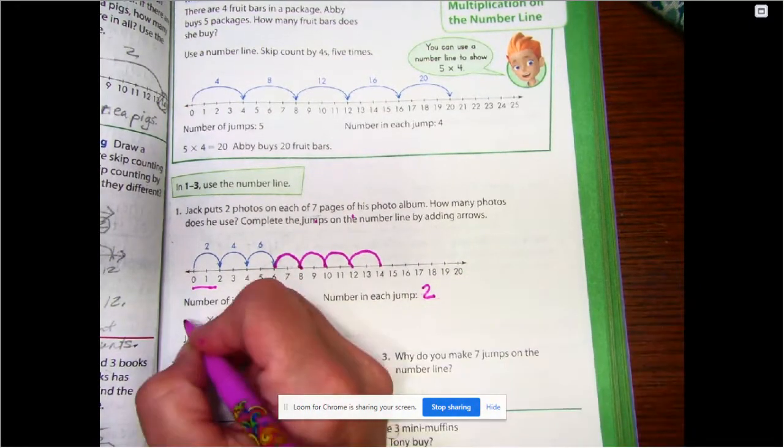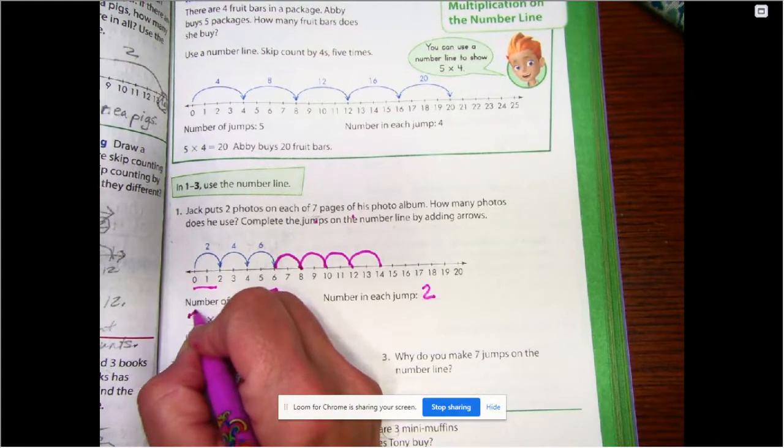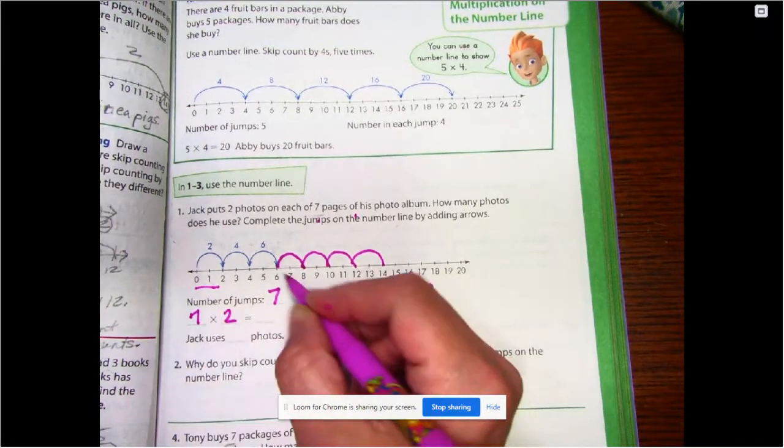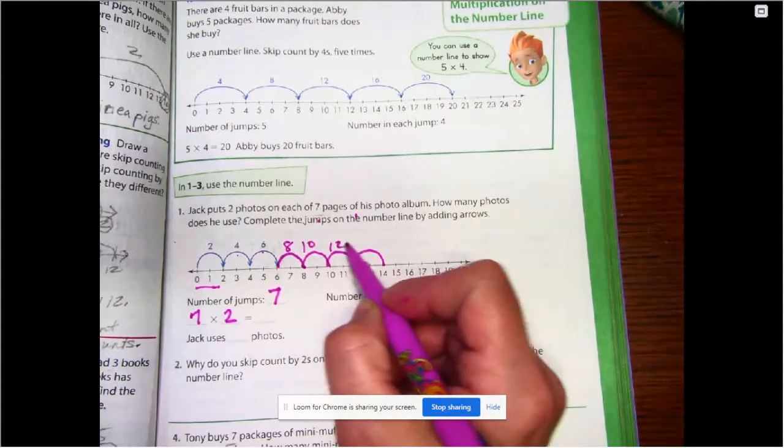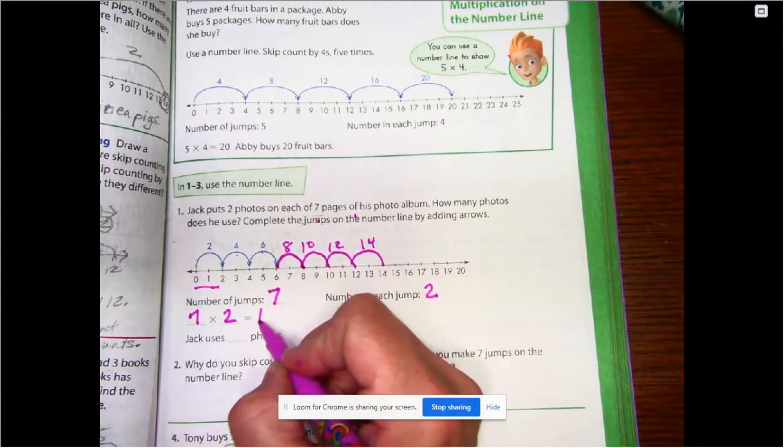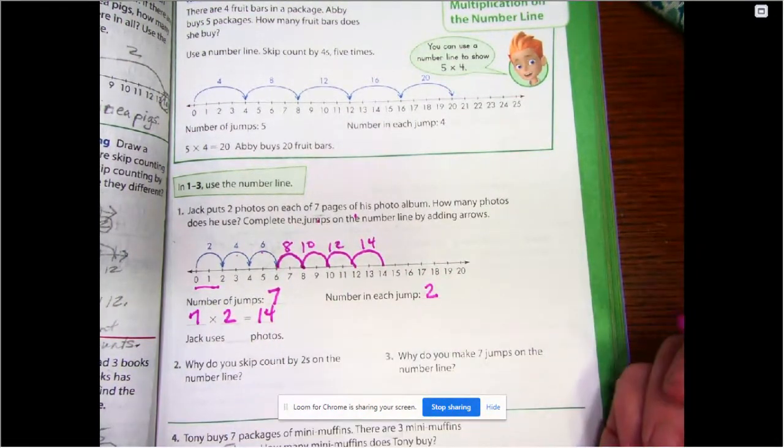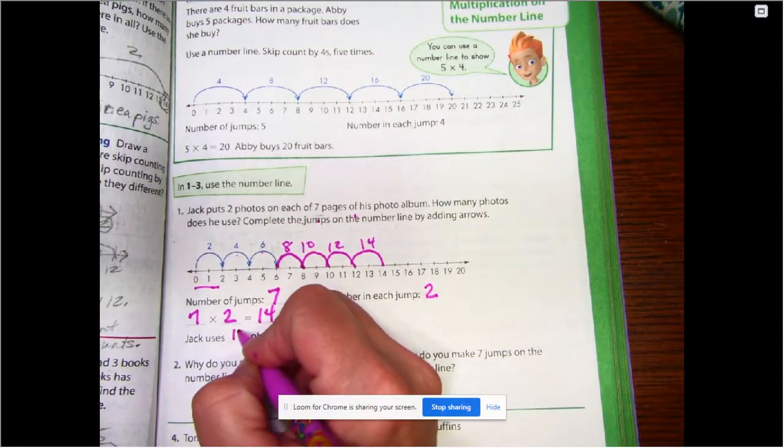Two. So we have seven groups of two equals 2, 4, 6, 8, 10, 12, 14. Equals 14. So Jack uses 14 photos.